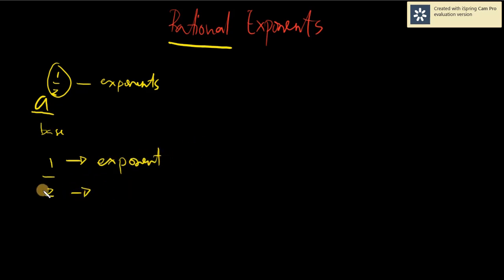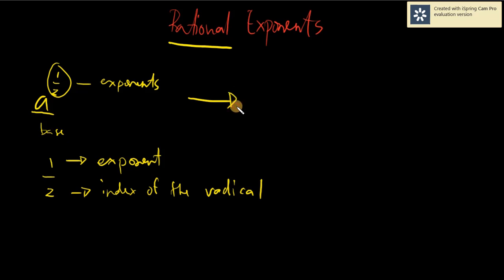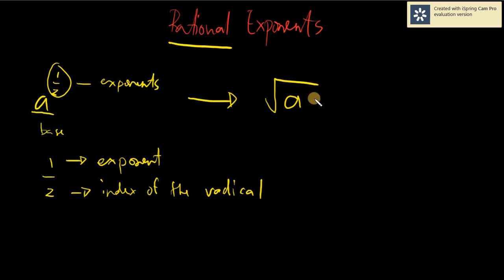The top part — the numerator — becomes the exponent of the variable, and the denominator becomes the index of the radical. So for a raised to one half, the radical form would be: the numerator is the exponent, giving a raised to one (which by default is not written), and the index is two (also not written by default). So this is read as the square root of a.